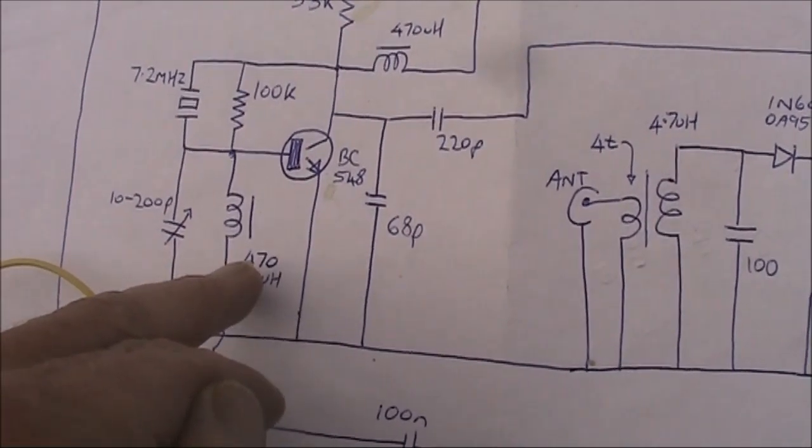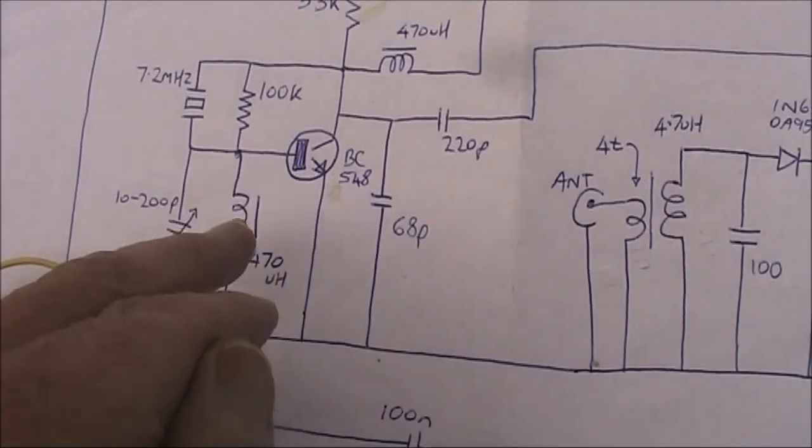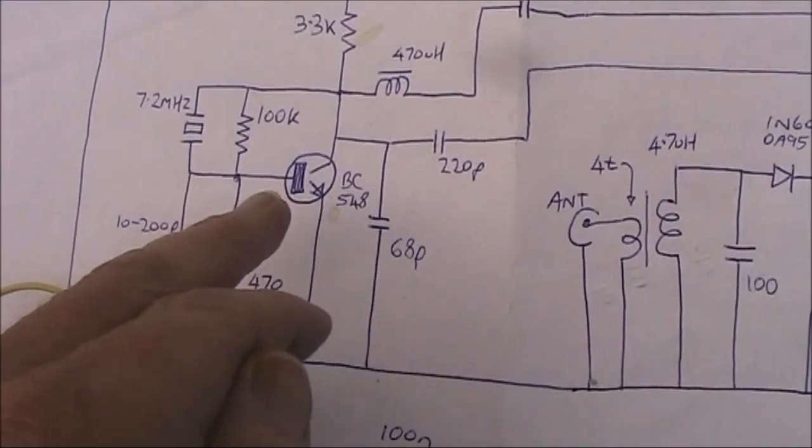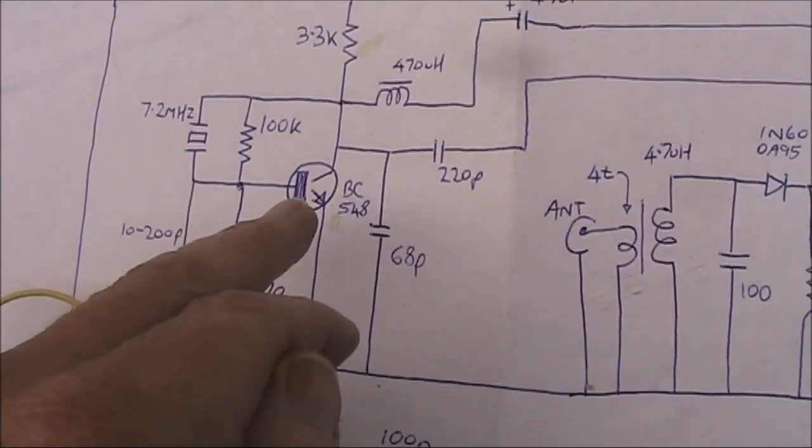The RF choke here is to separate the audio coming in from the RF, because there's also RF floating around, and the transistor does double duty as an audio amplifier.